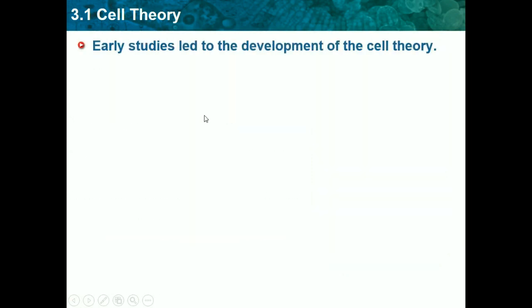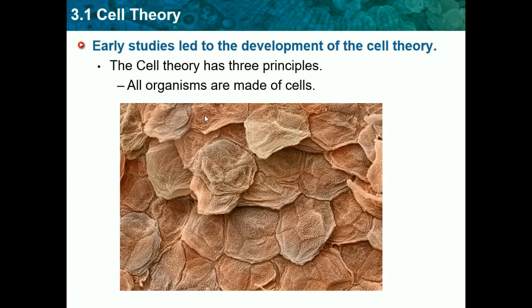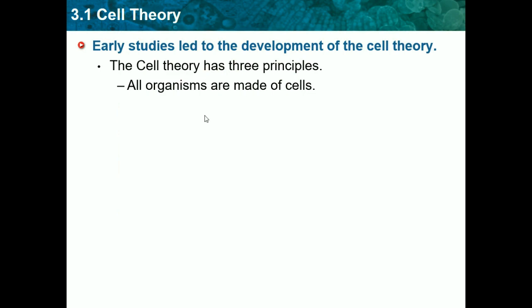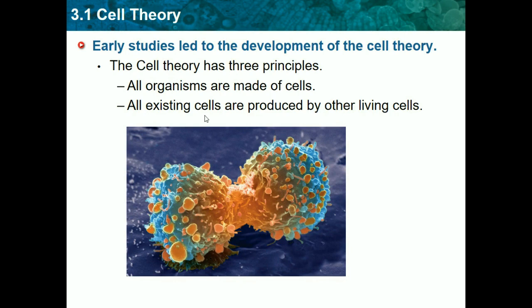Early studies led to the development of the cell theory, which has 3 main parts to remember. Part 1: all organisms are made of cells — every living thing has cells. Part 2: all existing cells are produced by other living cells, so one cell had to come from a cell before it. They don't spontaneously generate — they don't just pop out of nowhere. One cell comes from another through the reproductive phase, creating an identical copy.